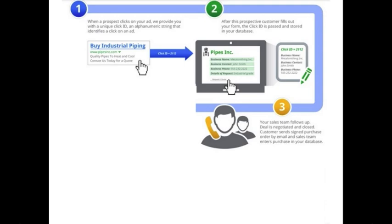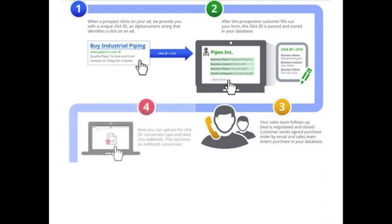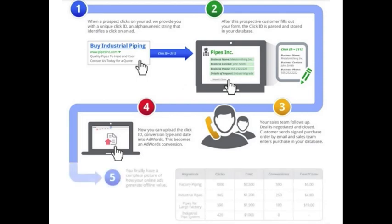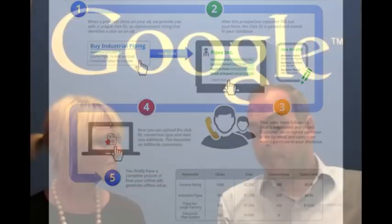A few weeks later, when a lead becomes qualified or actually signs the contract, you can give that click ID back to AdWords and simply say: at this date and time, this click ID had this type of conversion. Optionally, you can provide a dollar value with it as well if you want ROI reporting. And because this is all part of AdWords conversion tracking, you get the same great reporting and automation. So put simply, we give the advertiser the ID, and then they give it back to us when something important happens.